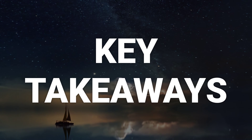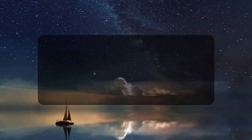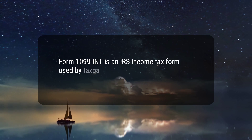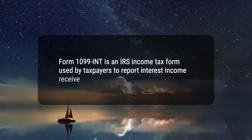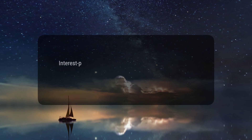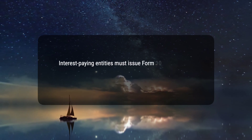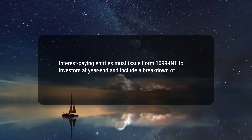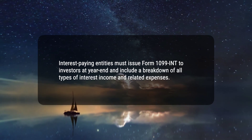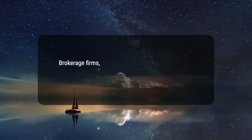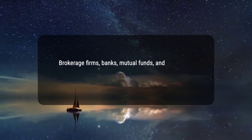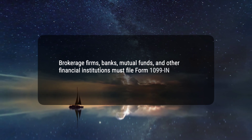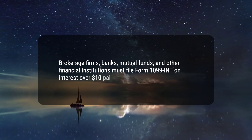Here are five key takeaways. 1. Form 1099-INT is an IRS income tax form used by taxpayers to report interest income received. 2. Interest-paying entities must issue Form 1099-INT to investors at year-end and include a breakdown of all types of interest income and related expenses. 3. Brokerage firms, banks, mutual funds, and other financial institutions must file Form 1099-INT on interest over $10 paid during the year.